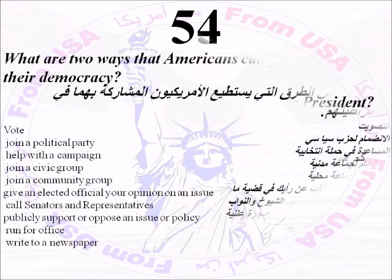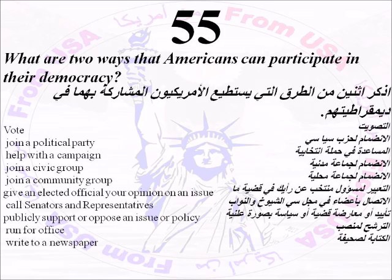Number Fifty-Five: What are two ways that Americans can participate in their democracy? Vote, join a political party, help with a campaign, join a civic group, join a community group, give an elected official your opinion on an issue, call senators and representatives, publicly support or oppose an issue or policy, run for office, or write to a newspaper.